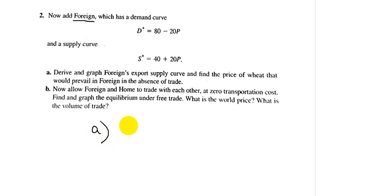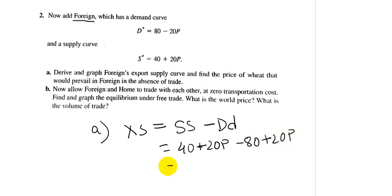That is, foreign export supply. Excess supply can only be met when there is an excess of supply after meeting the demand that prevails in the country. Therefore, it will be supply minus demand. Let us put from the given equation: that is 40 plus 20P minus 80 minus 20P.